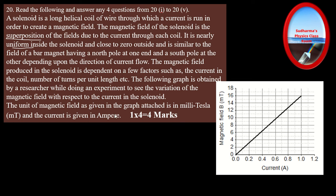The magnetic field produced in a solenoid depends on factors such as the current in the coil and the number of turns per unit length. A researcher obtained a graph showing the variation of magnetic field with current. The magnetic field B is given in milli-tesla on the y-axis and current in amperes on the x-axis. The graph is a straight line with increasing slope — this indicates a direct proportionality: current and magnetic field are directly proportional. The unit milli-tesla is just the unit of magnetic field — do not be alarmed by it.